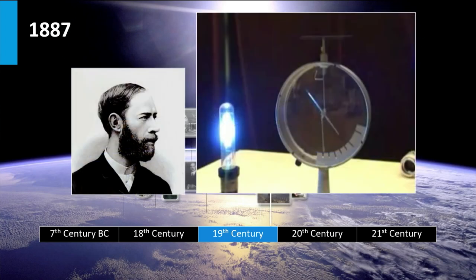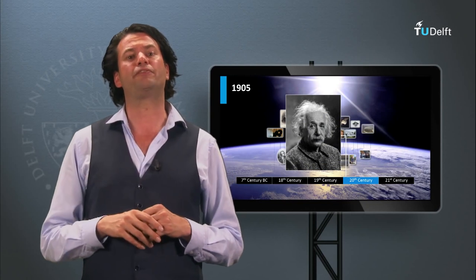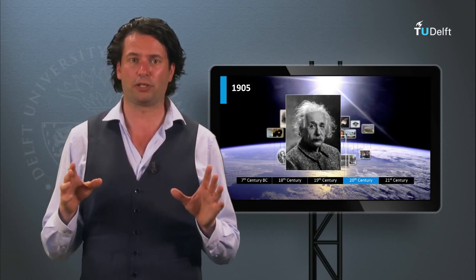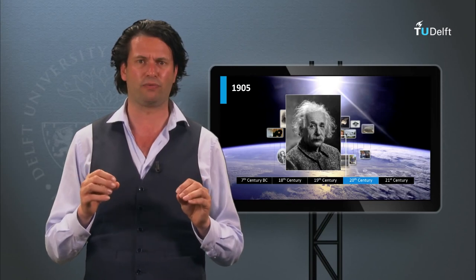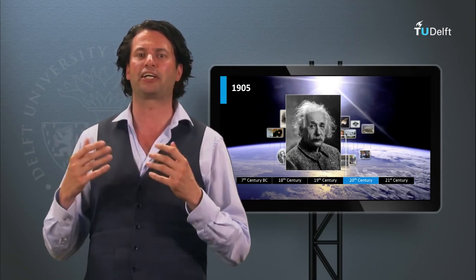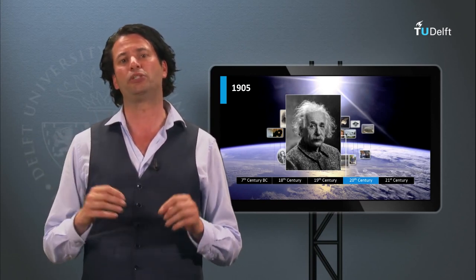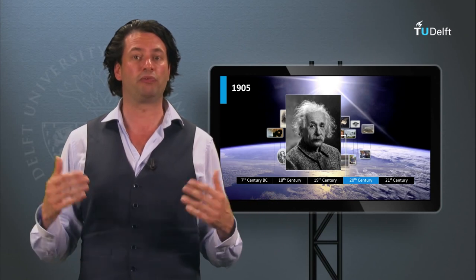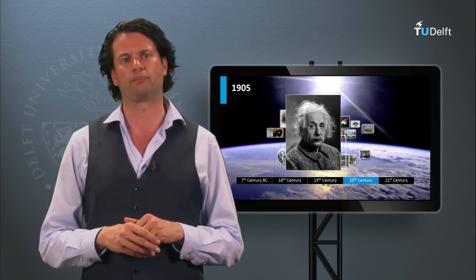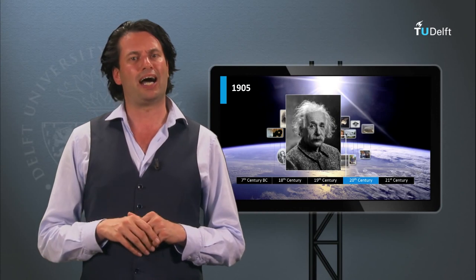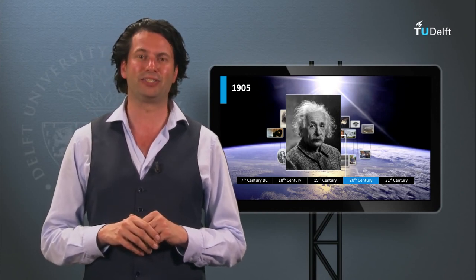In 1887 Hertz discovered the photoelectric effect, which is the effect that some charged objects when exposed to ultraviolet light lose their charge faster. In 1905 Albert Einstein published a paper in which he explained the photoelectric effect, assuming that light energy is carried in quantized packages of energy. Nowadays we call these packages photons, which will be discussed later in great detail. For this paper Einstein received the Nobel Prize in 1921.